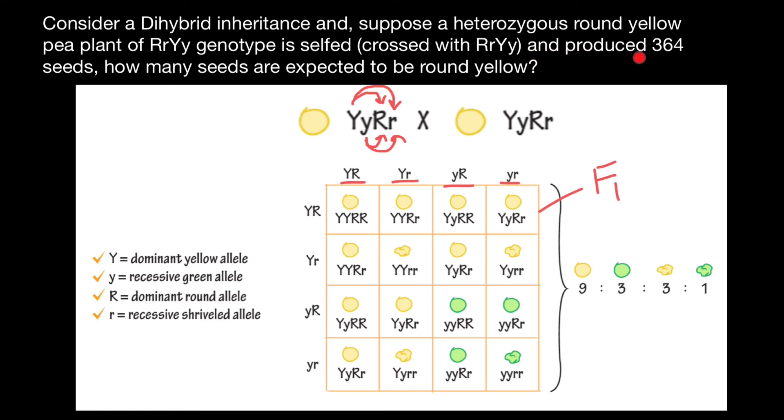This is the question of our problem. This cross would produce 364 seeds. How many seeds are expected to be round and yellow? So we just have to multiply 364 by 9/16. This would equal 364 times 9 divided by 16, which gives us 204.75. We can round to 205.